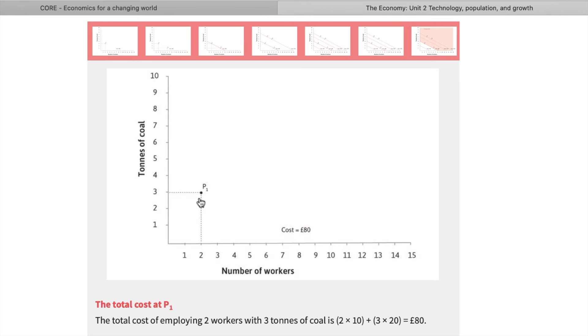This technology is relatively energy intensive because it requires three tons of coal and two workers. Now, how do we calculate the cost of this? It all depends on two pieces of information: the cost of labor for us and the cost of coal. Let's assume the cost of labor, which is wage, is 10 pounds per hour and the cost of coal is 20 pounds per ton.